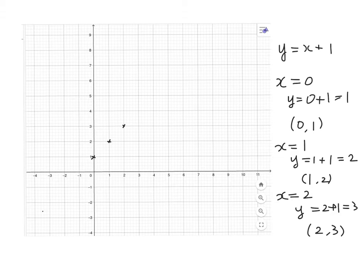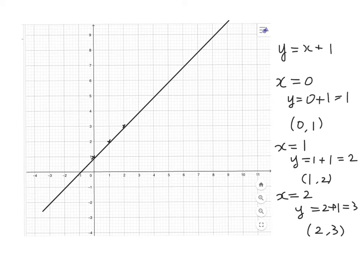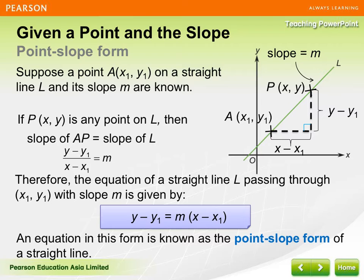We draw 3 points on the graph and connect the points by a straight line. That is the graph of the equation y equal to x plus 1. We have learned how to draw the graph from the equation. Now, conversely, how to find the equation from a given graph or some given information. For example, if we have a point and a slope, how to find the equation of this straight line L.